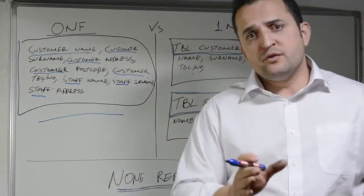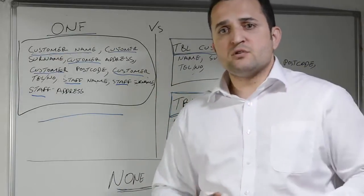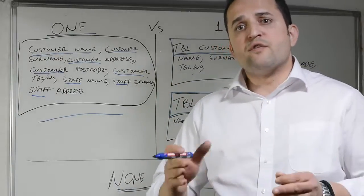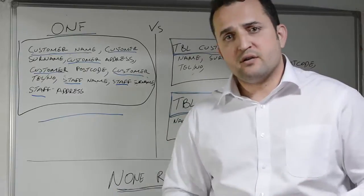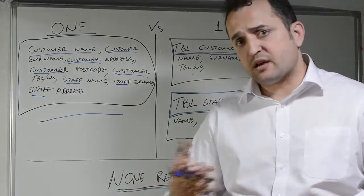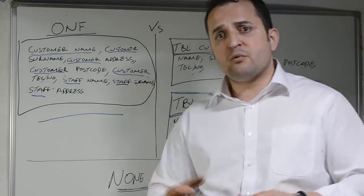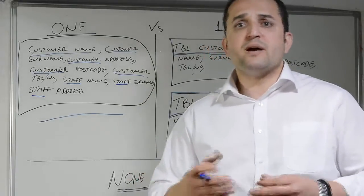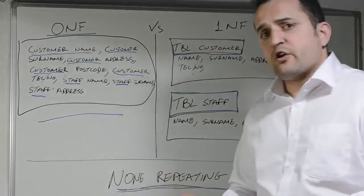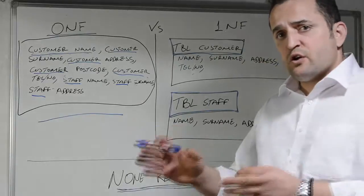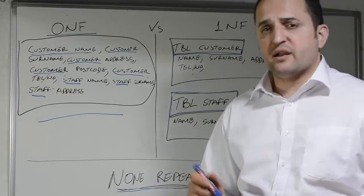Once we do this, we can follow some other rules to break down data even further, like the second normal form, third normal form, fourth normal form, and so on. For this tutorial, I'm just going to show you how to convert data from 0NF to 1NF. The process is straightforward and simple.